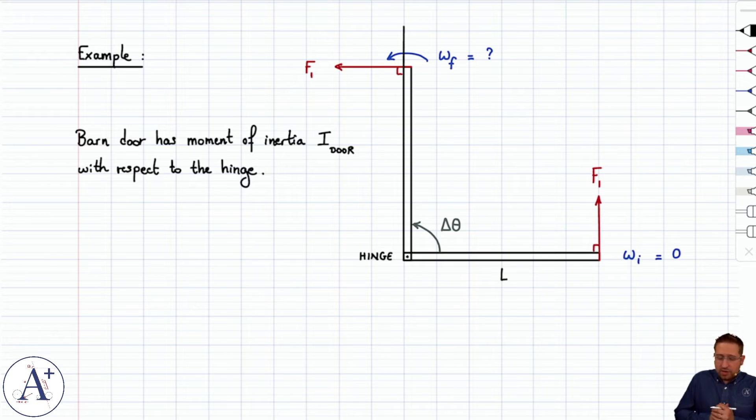We are going to do that by applying delta K equals work net. You write delta K, you write work net, and then you set the two equal to each other. Delta K is the change in rotational kinetic energy because we have rotational motion. So it's one-half, we have the moment of inertia of the door, I door,